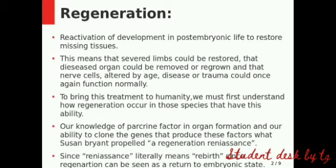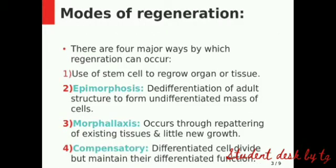Now we have the modes of regeneration. There are 4 modes of regeneration. The first is Epimorphosis, used to regrow an organ or tissue using stem cells. In epimorphosis, the adult structure will de-differentiate into an undifferentiated mass of cells, and then re-differentiate to develop the organ.